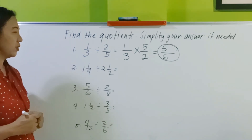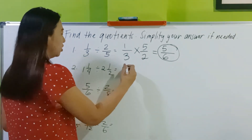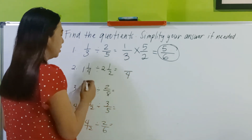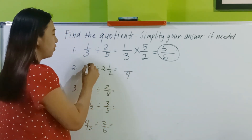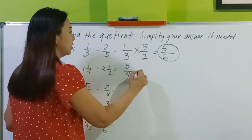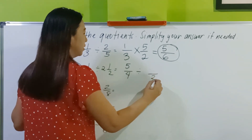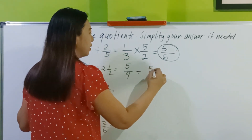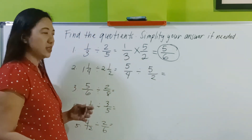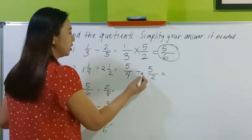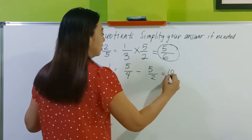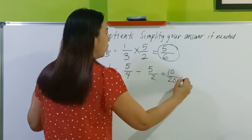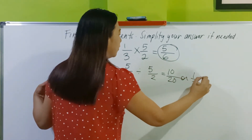Number 2: mixed numbers — change to improper form. 4 times 1 plus 1 is 5, and 2 times 2 plus 1 is 5. Now let's do the shortcut: 2 times 5 is 10, 4 times 5 is 20, which simplifies to 1 half.